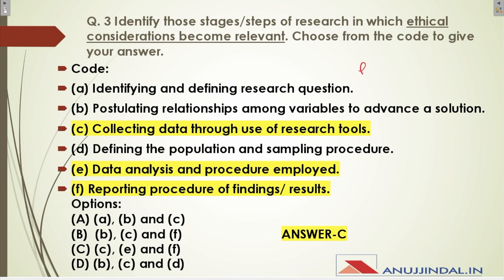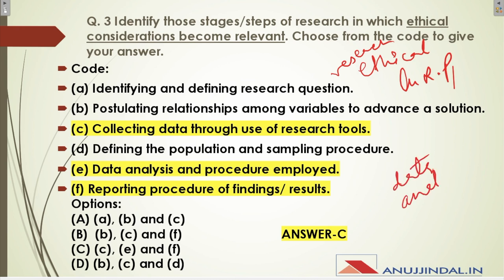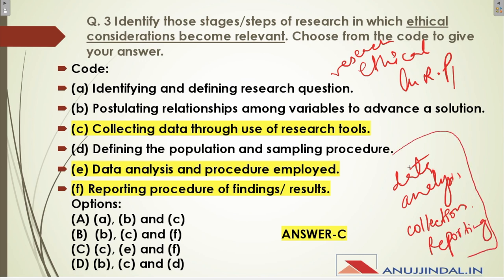Question three is a very common question about research ethics — you will find it in every paper. In the research process, the areas where ethics are most used are data collection, data analysis, and reporting. So the correct answer is: collecting data through use of research tools, data analysis, and reporting procedure of finding results — answer C.